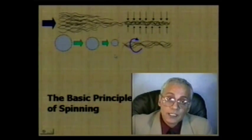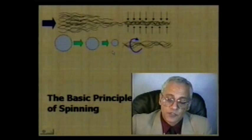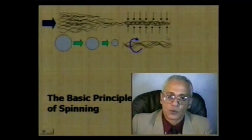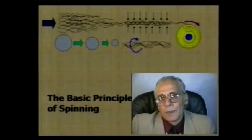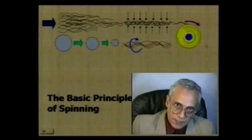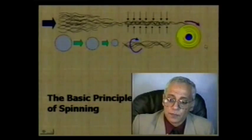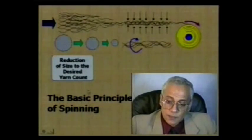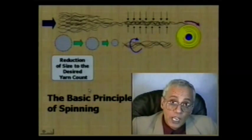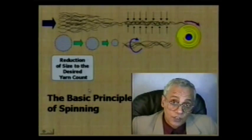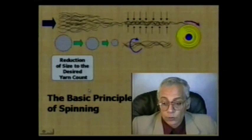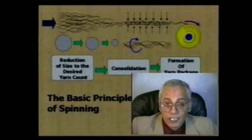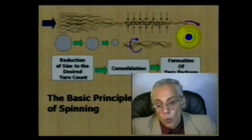So in any spinning system, three mechanisms must be present: first, drafting to reduce the fiber strand to the desired yarn count; second, consolidation to bind the fibers and add the necessary strength; and finally, yarn package forming through a winding process.